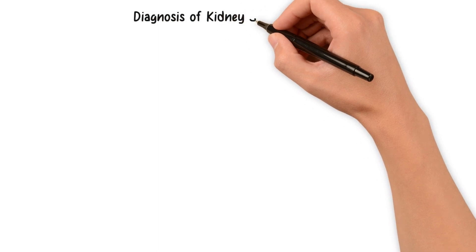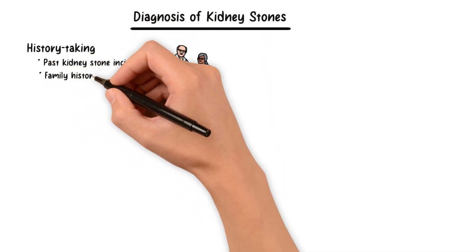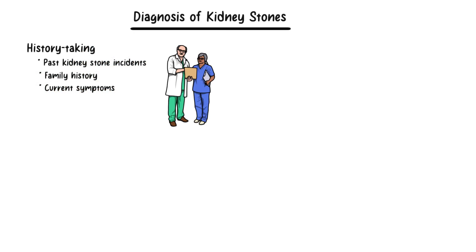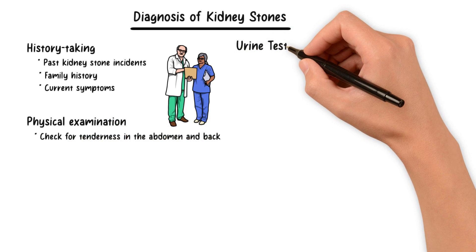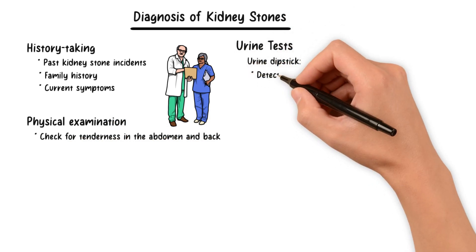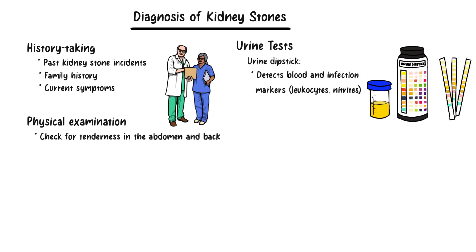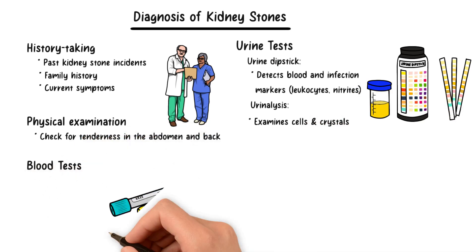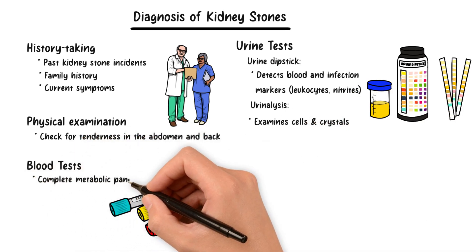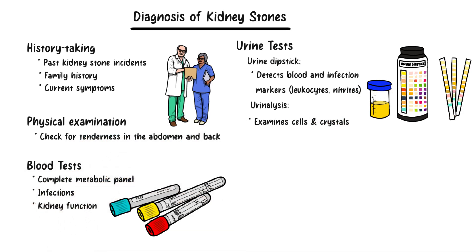Diagnosing kidney stones is crucial for effective treatment. Initially, a detailed medical history is taken, including previous kidney stones, family history, and symptoms. A physical examination is done to check for tenderness in the abdomen and back. A urine dipstick quickly detects blood and infection markers like leukocytes and nitrites, followed by urinalysis examining cells and crystals. Blood tests, including a comprehensive metabolic panel, are done to identify infections, assess kidney function, and determine the type of stone.